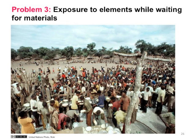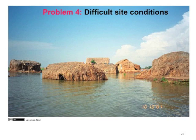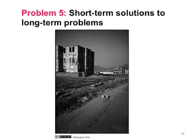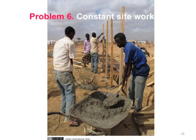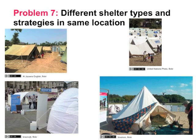Four: difficult site conditions. Five: short-term solutions to long-term problems. Six: constant site work. Seven: different shelter types and strategies in the same location. Eight: overcrowding that may promote the spread of disease.